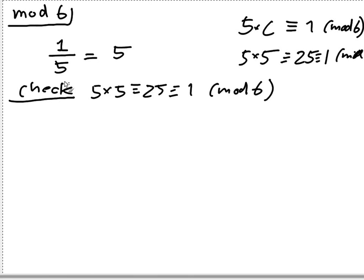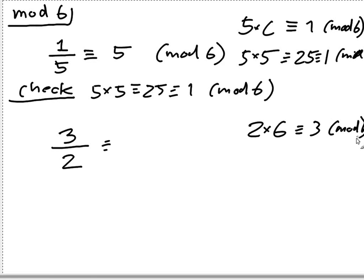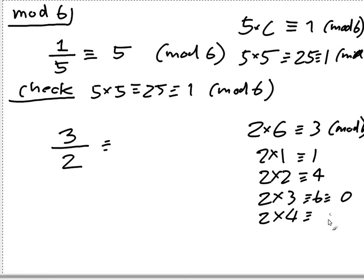Let's look at another example with a different divider. What exactly is 3 divided by 2 mod 6? We want to find a number C, such that 2 times C equals to 3 mod 6. You can try to write out all the values of 2 times 1, that's 2. 2 times 2, that's 4. 2 times 3, that's 6, that's 0.